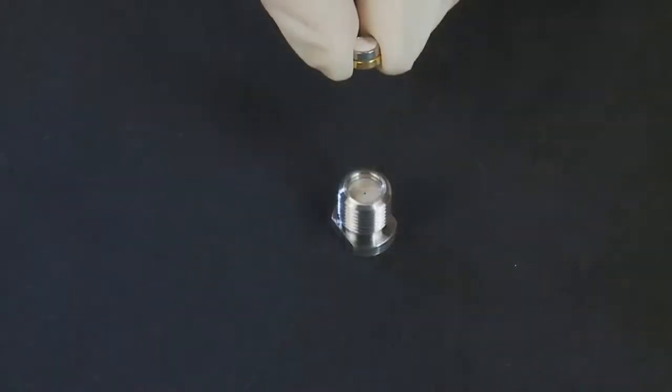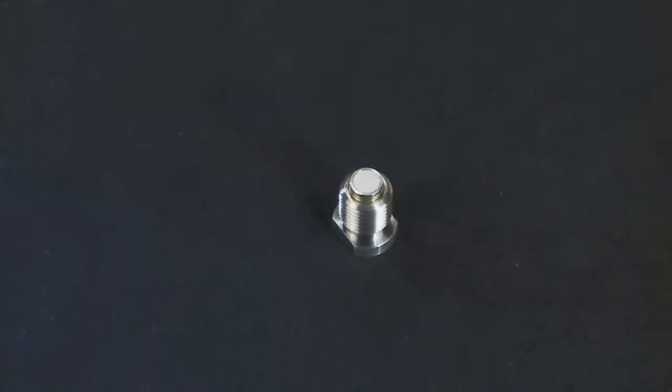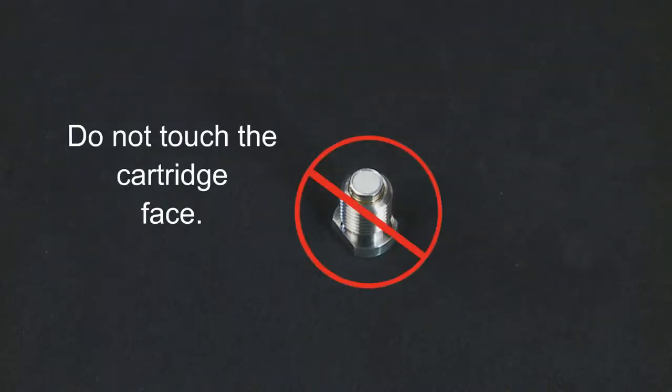Place the male unit on a flat surface. Insert a Security Guard cartridge with the gold end facing down. Do not touch the cartridge face as this may contaminate the cartridge.